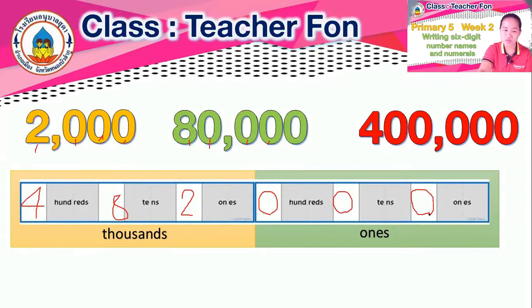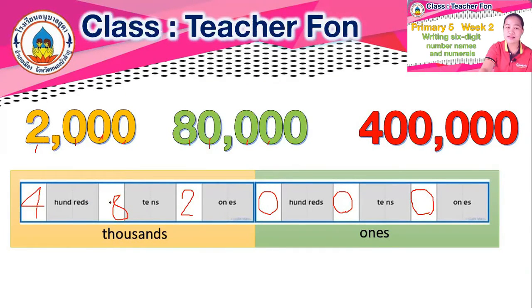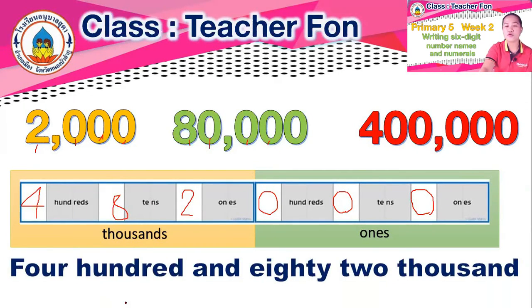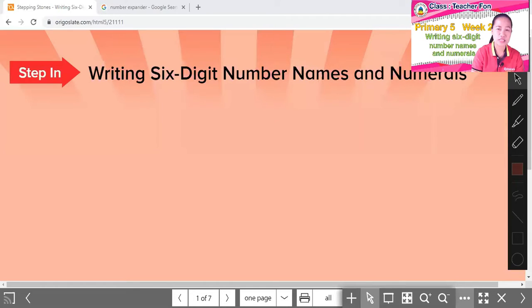How do we read this word? How do we say this number? Four hundred and eighty-two thousand. Four hundred and eighty-two thousand. Are there any zeros? No — so it's simply four hundred and eighty-two thousand. Easy!